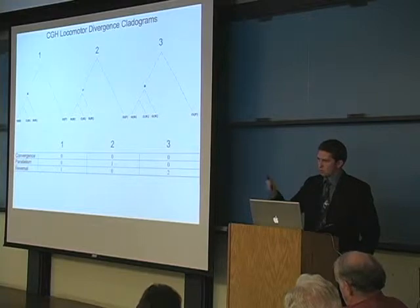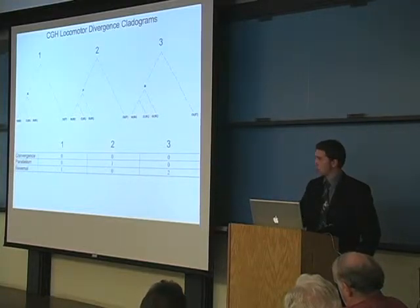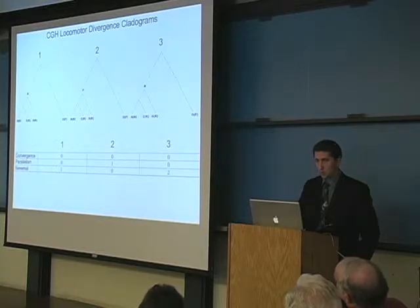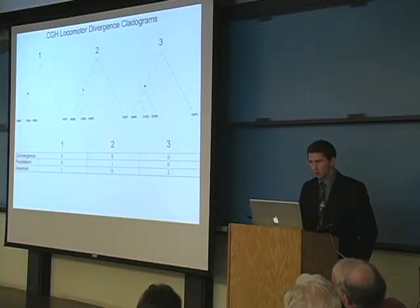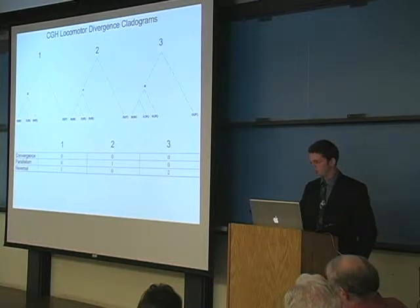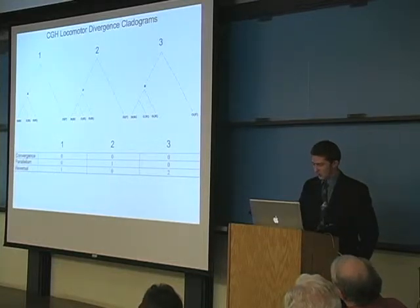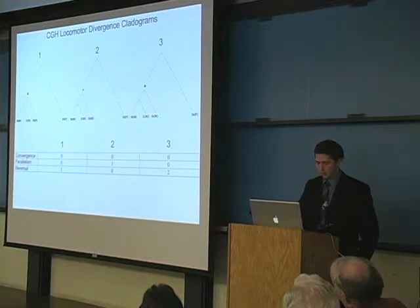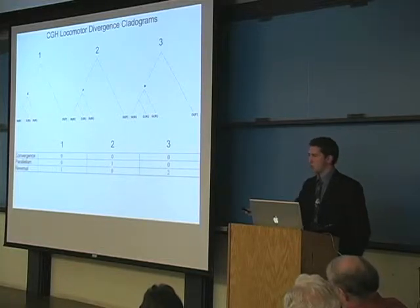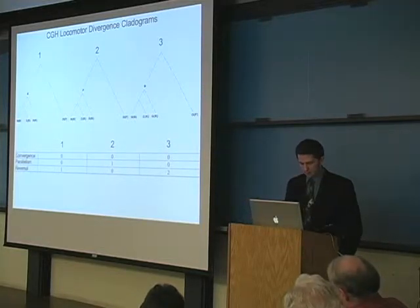Which of these last two is more parsimonious is a matter of debate, but in our opinion, going from a less specialized palmegrate to a very specialized knuckle walker and then to a very specialized biped is much less parsimonious than a locomotor parallelism in two closely related and recently divergent groups, especially during an adaptive radiation.